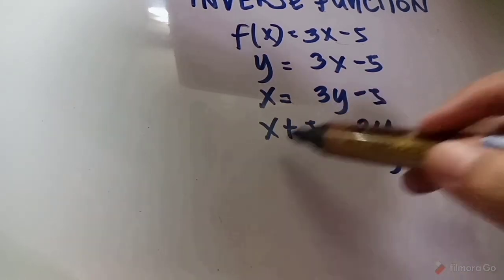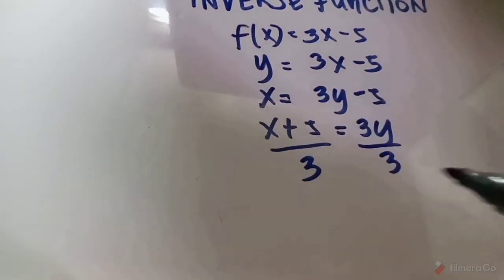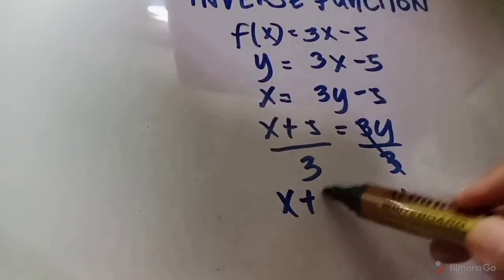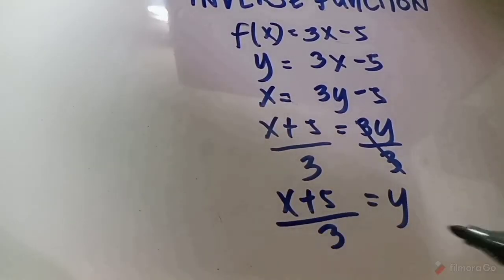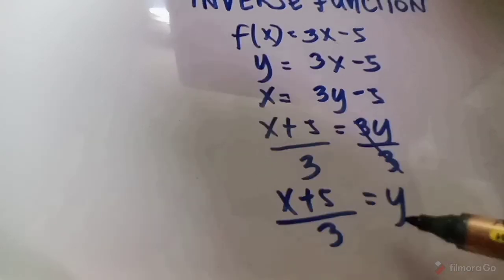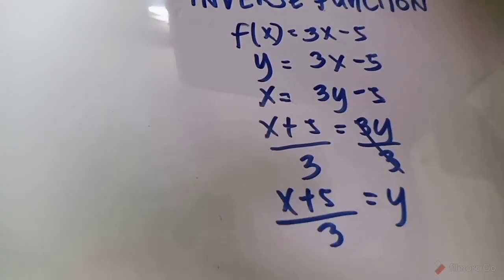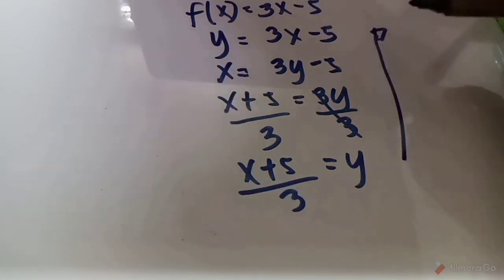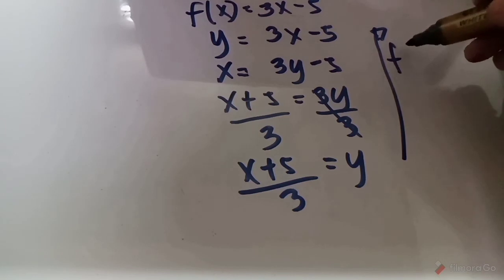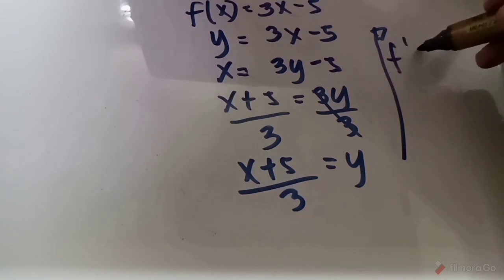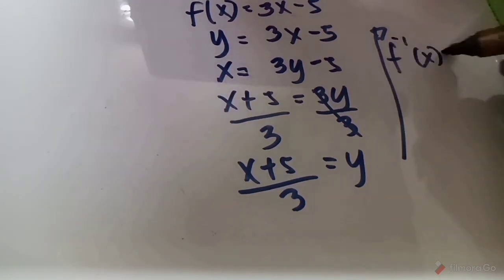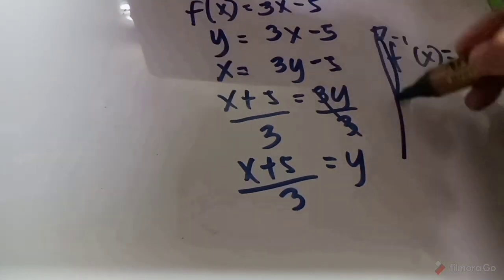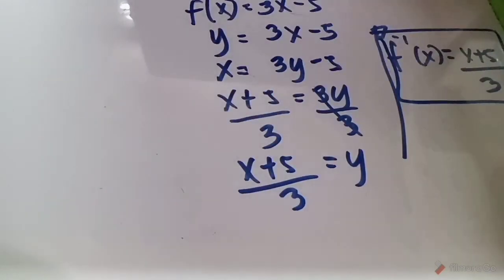Step 4: Divide both sides by 3: y = (x + 5) / 3. Step 5: Replace y with inverse function notation — f⁻¹(x) = (x + 5) / 3. This is the final answer.